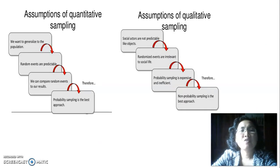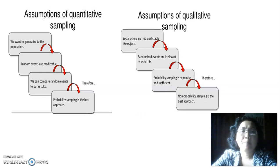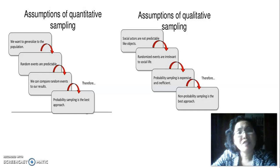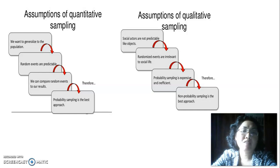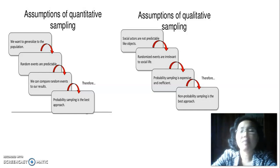There are different assumptions underlying quantitative and qualitative sampling. In quantitative sampling, the assumptions are: we want to generalize to the population, random events are predictable, and we can compare random events to our results — which calls for probability sampling. In qualitative sampling, the assumptions are: social actors are not predictable like objects, randomized events are not relevant to social life, and probability sampling is expensive and inefficient — so you use non-probability sampling.